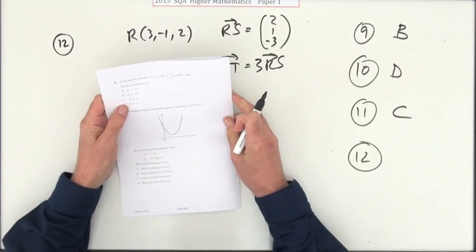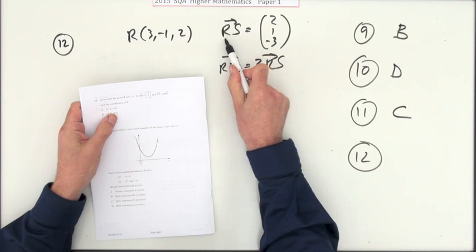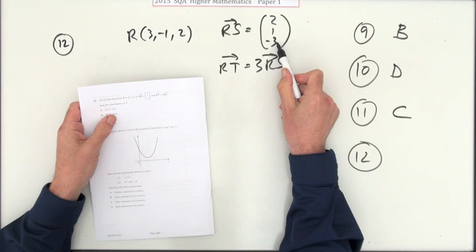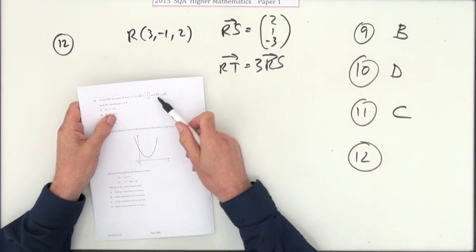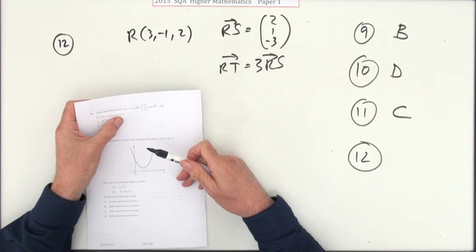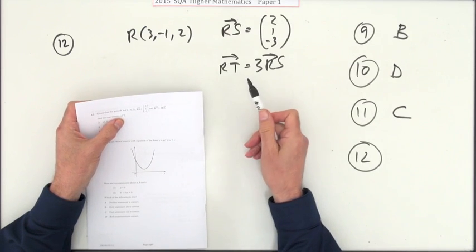Number 12. Given that R is this point, and to move from R to S you would follow these moves, that's displacement. And RT, that is going from R to T, is 3 times going from R to S. It just says what's the coordinates of T, so in other words you don't really care what S is because you just want to go straight from R to T.